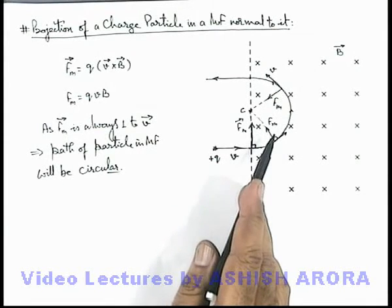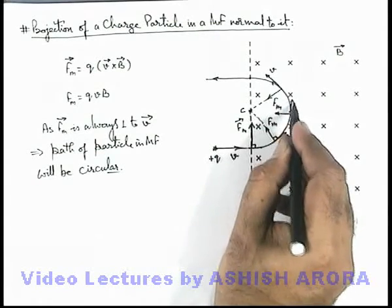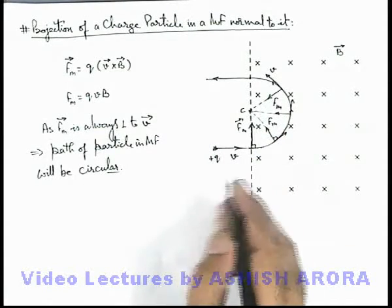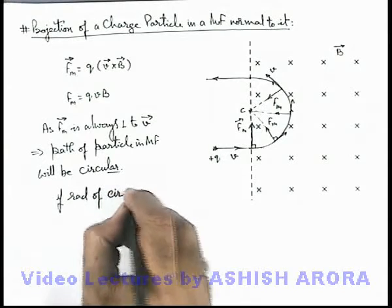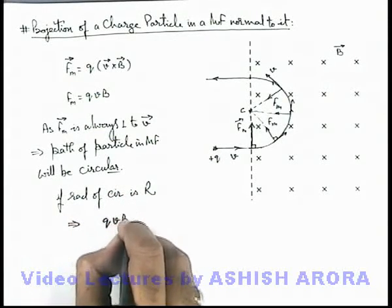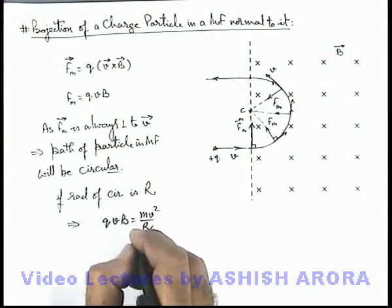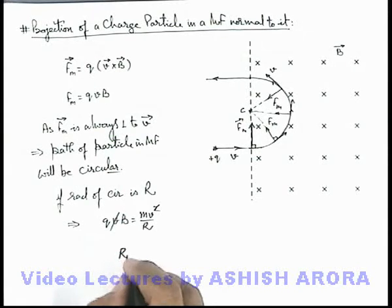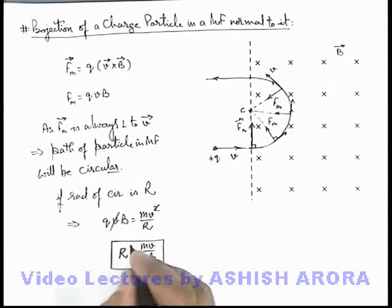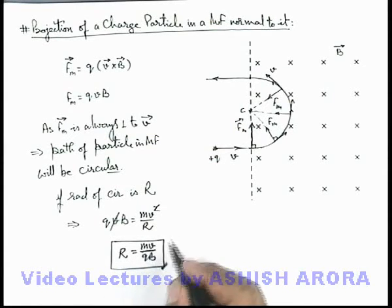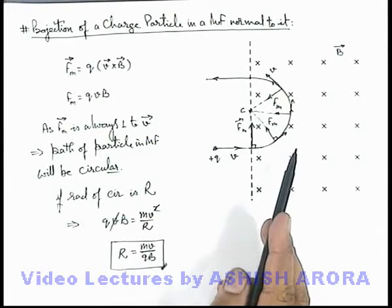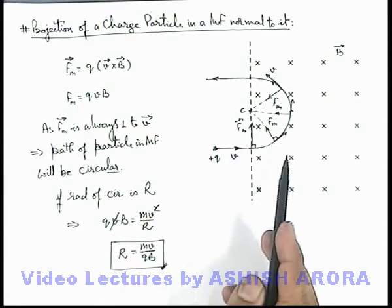For this circular motion, the necessary centripetal force at every point is provided by the magnetic force. If the radius of the circle is r, we can write that qvB provides the centripetal force mv²/r for the circular motion. Here v cancels out and we get the radius of the circle as r = mv/qB. This is the radius of the circle in which the particle will move. You must be careful about this expression, as in many cases we directly use the radius of circular path as mv/qB whenever a charged particle enters a magnetic field such that the velocity vector is perpendicular to the magnetic induction.